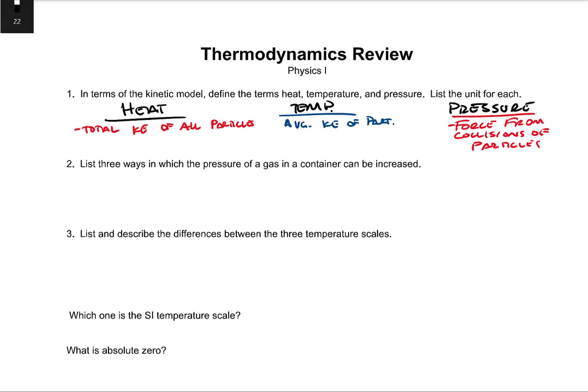The unit for each: heat we measure in joules because it is a type of energy. Temperature we measure in degrees Celsius or Kelvin. There are no degrees Kelvin, it's just Kelvin. And then pressure, we use Pascals. Pascal is a Newton per meter squared because pressure is force over area.